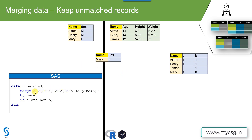We need to specify the names of the datasets to merge, then specify the list of by-variables on the BY statement based on whose values we want to join the records. We also use the IN= dataset option to create temporary variables — identifying name values from SEX with A and from AHW with B. When we say IF A AND NOT B, it identifies names coming from SEX but not in AHW. Mary is the only such record, so this code gives us the desired output, which we are naming as 'unmatched'.